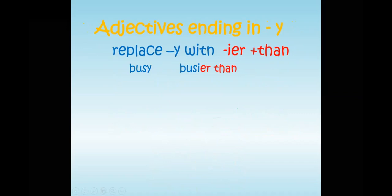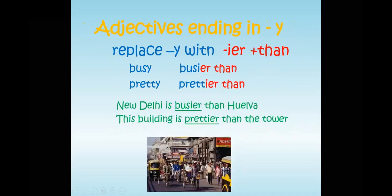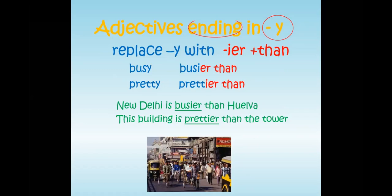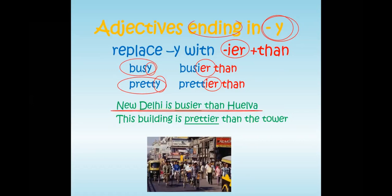Now, adjectives ending in -Y. When the adjective ends in -Y, for example 'pretty' or 'busy', you change the Y to I and add -ER. Example: New Delhi is busier than Huelva. Or: this building is prettier than the tower.